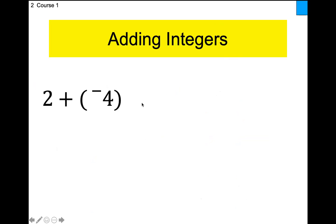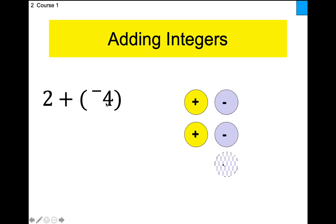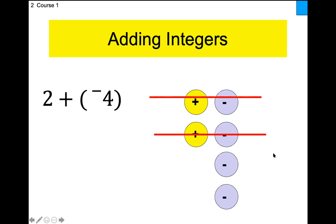Let's see that again with two plus negative four. Two is positive, so two yellow coins. Four is negative, so four negative coins. A yellow coin and a blue coin together is zero — one minus one is zero. I cross out two pairs, leaving two negative coins. So two plus negative four is negative two.